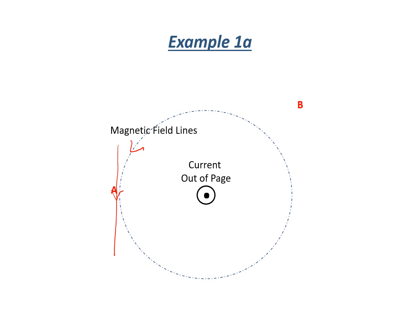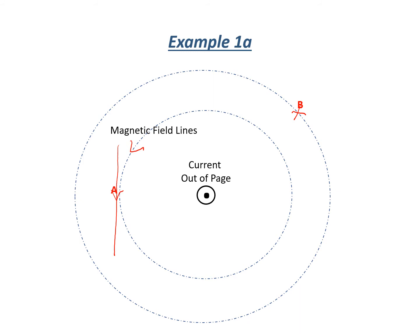We can try this again to determine the direction of the magnetic field at location B. Drawing a circular ring large enough to extend to where point B is, the magnetic field is again in the same anti-clockwise direction. Drawing a tangential line to point B on the ring indicates the direction of the magnetic field at point B.